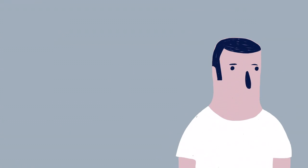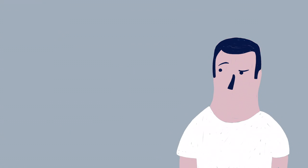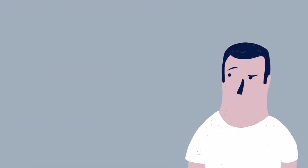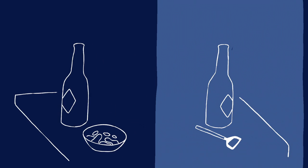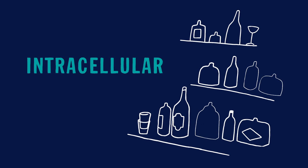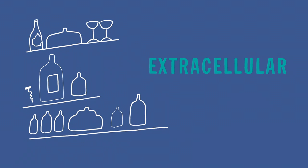So now we're ready to see where the resting potential comes from. Let's make this more like a real-life situation, of sorts. Let's imagine the cell as a bar — two bars, actually: an inside bar, representing the intracellular space, and an outside bar, representing the extracellular space.